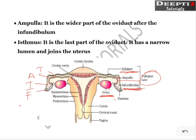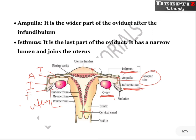Here there is a chamber — a muscular chamber — termed as the uterus. This is the uterine cavity, and all this forms the uterus. The uterus consists of different layers. The outermost layer is called perimetrium, the middle layer is called myometrium, and the innermost layer is termed endometrium.